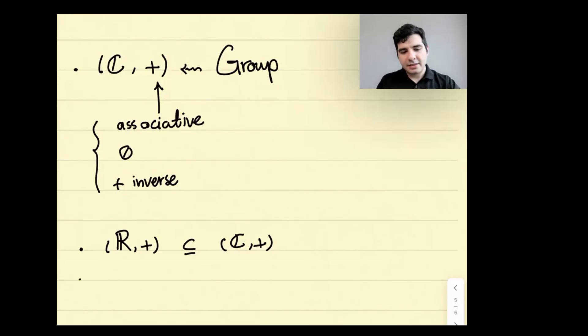For instance, the set of natural numbers, whether we define it as 0, 1, 2, 3 or just 1, 2, 3, it doesn't matter much. This is not a group under addition. Because, for instance, what is the additive inverse of 2? It should be minus 2, but minus 2 is not here. So this is not a group, but R and C are groups. We are extending the group of real numbers to a larger group of complex numbers.